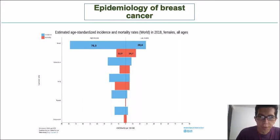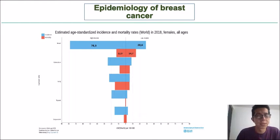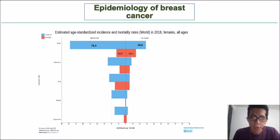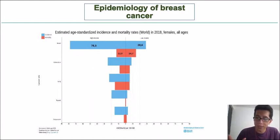If we talk about the epidemiology of breast cancer, we need to know that this cancer is a really serious health problem worldwide. The incidence rates are higher in high-income countries compared with low-income countries, which may be due to better diagnostic capacity. However, the mortality rates are higher in low-income countries, possibly due to differences in access to treatment, as the health systems in high-income countries tend to be better than in low-income countries such as Latin America.